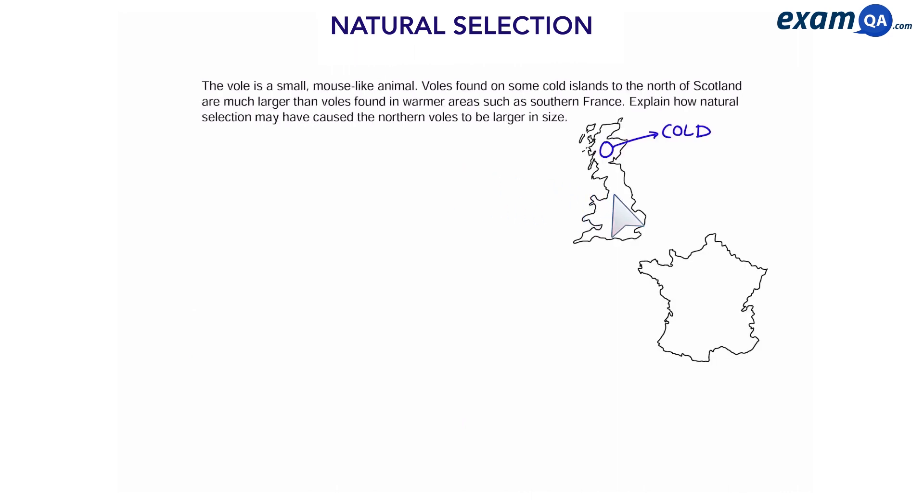So it says in Scotland where the weather is cold we can find larger voles compared to southern France where the weather is warm and we have smaller voles. Explain how natural selection has caused the voles in Scotland to become larger in size. So here's our chance to use the five step combo.